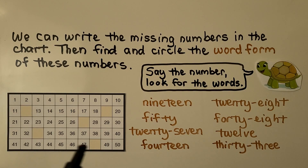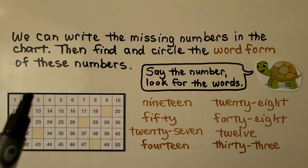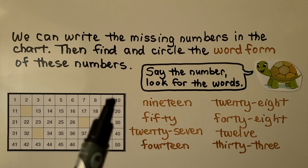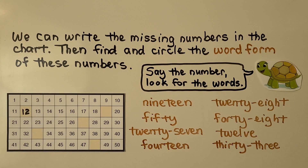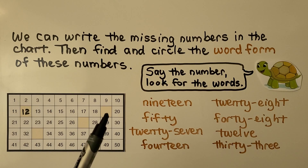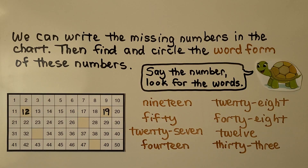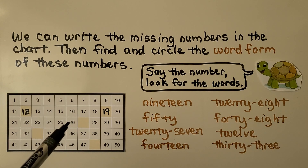We can write the missing numbers in the chart, then find and circle the word form of those numbers. The chart counts one, two, three, four, five, six, seven, eight, nine, ten, eleven — the next number would be twelve. The numbers are counting on by one, so we look at the number before the missing number to know what to write.